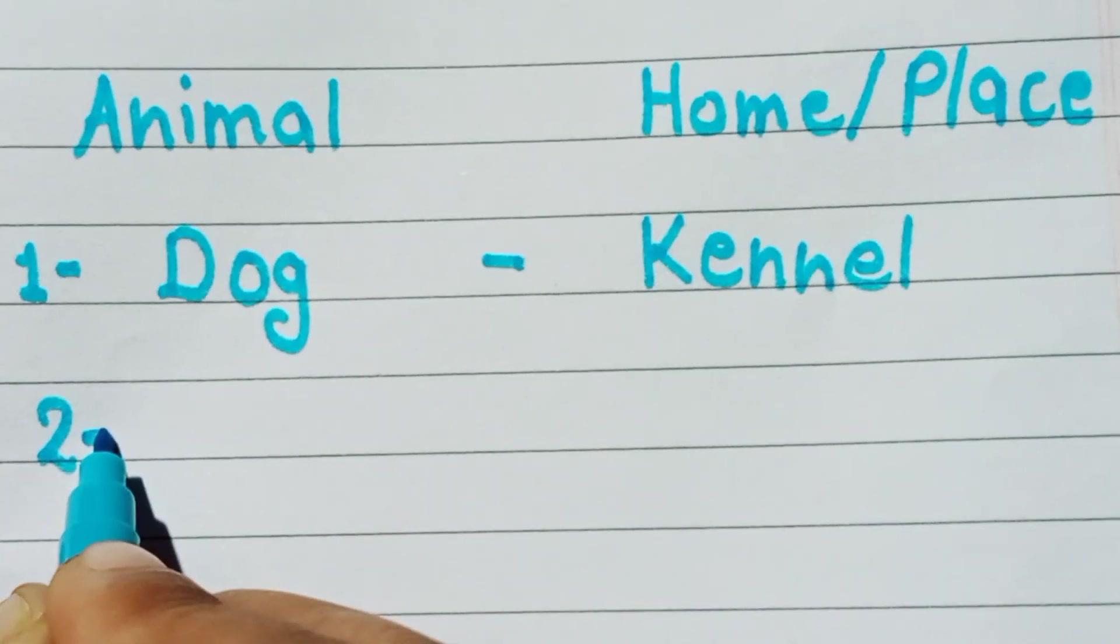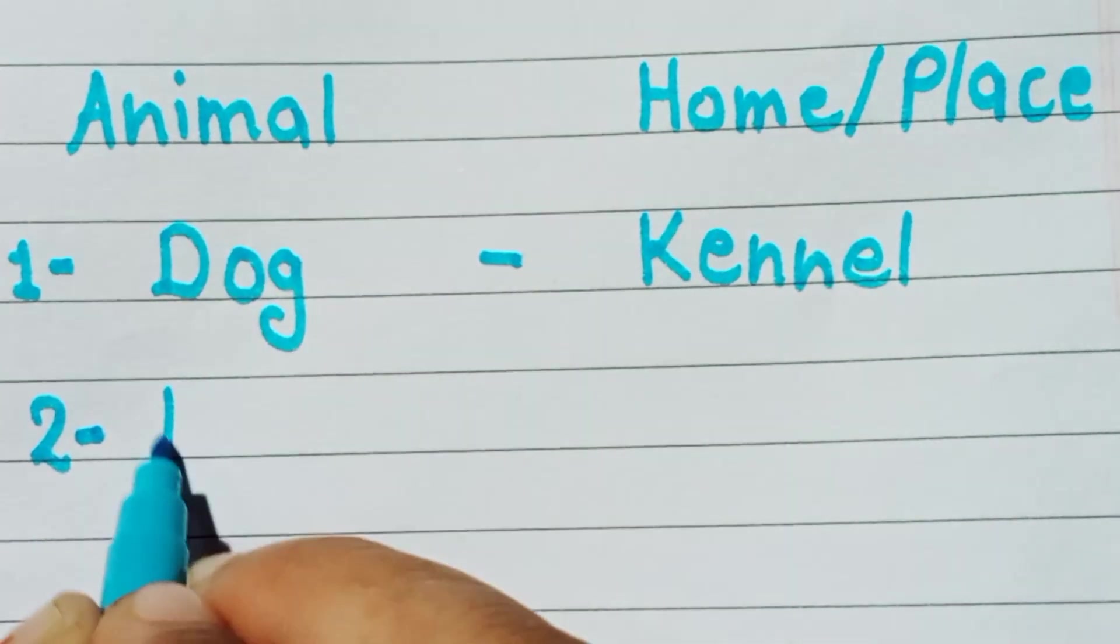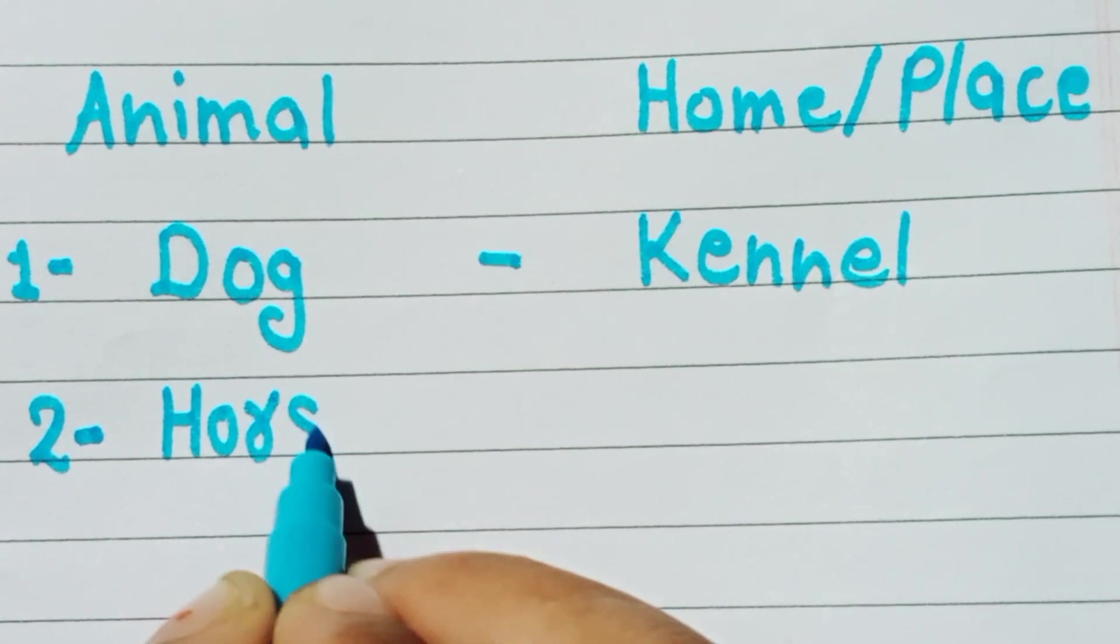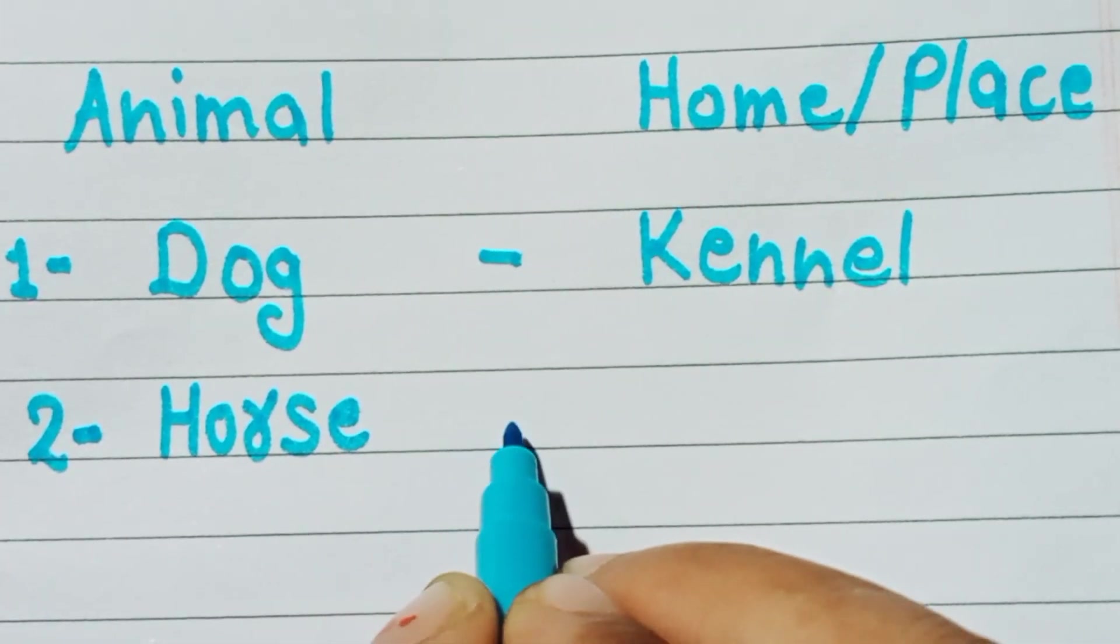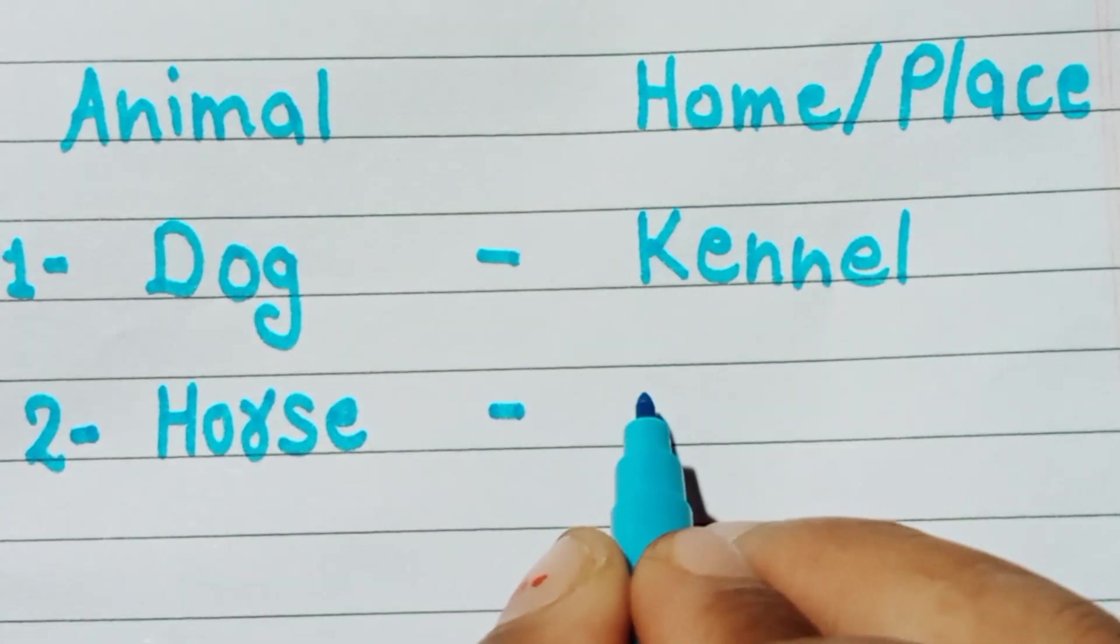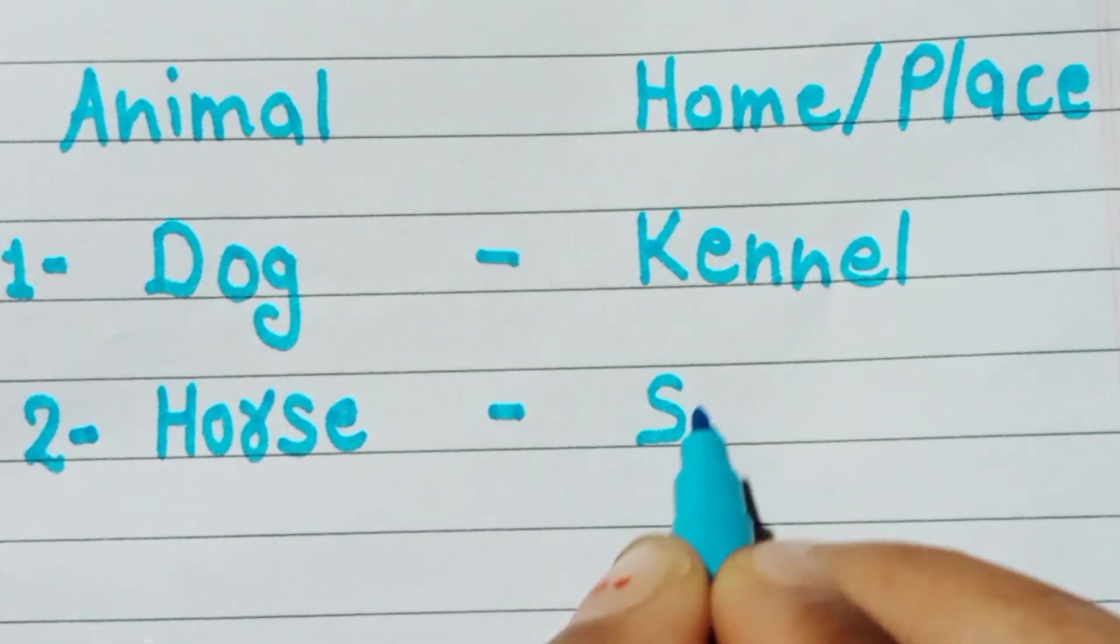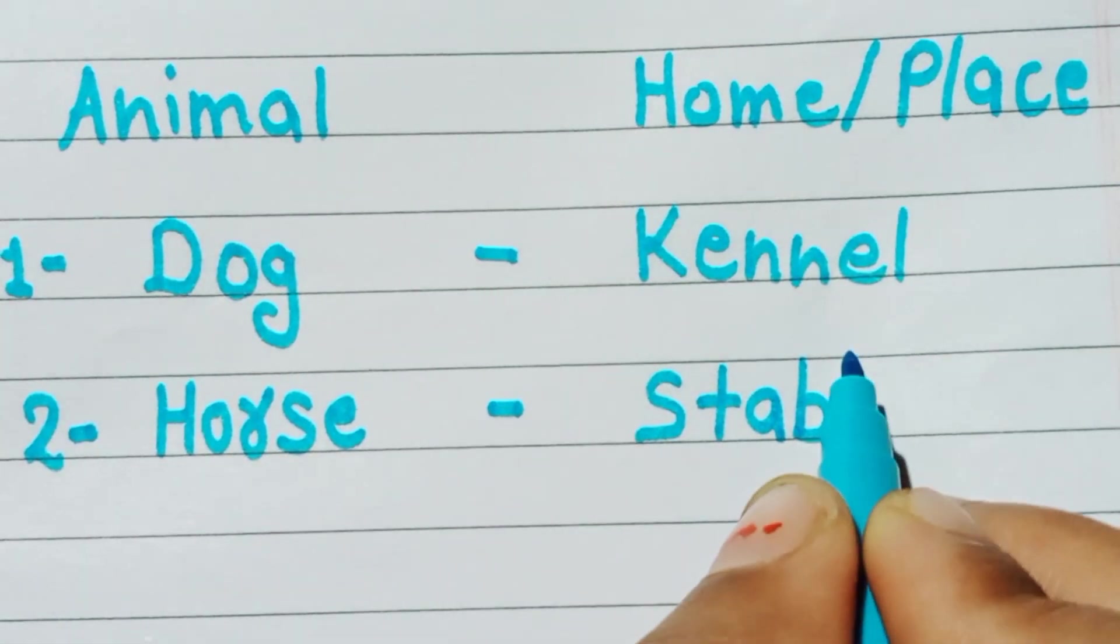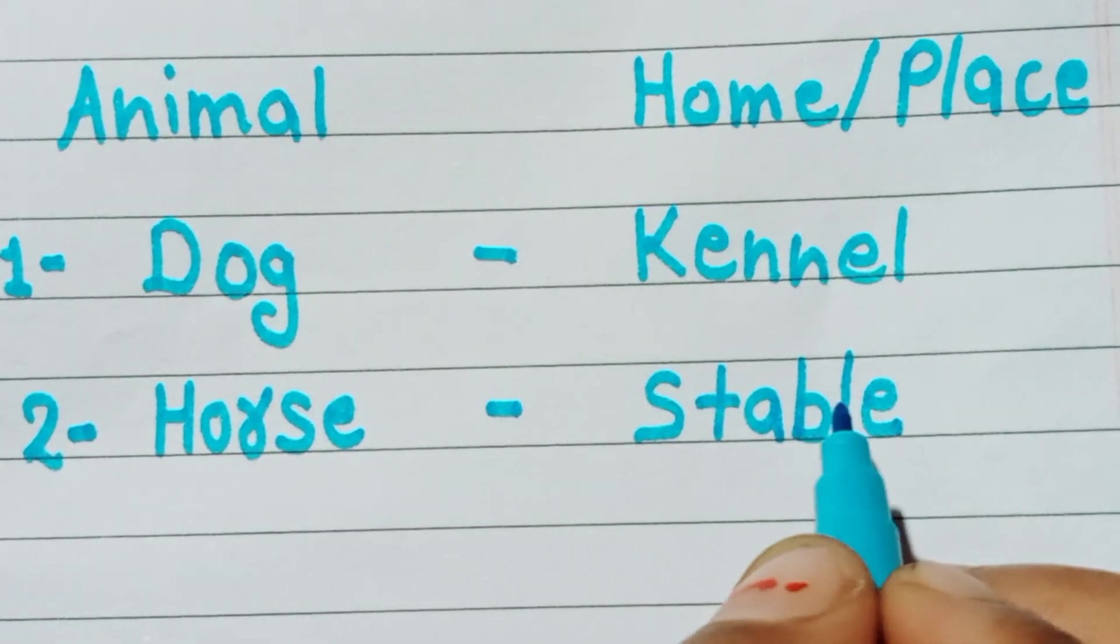Second number is horse, h o r s e. Horse home is stable, s t a b l e.